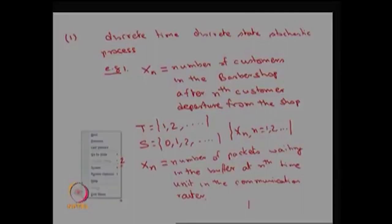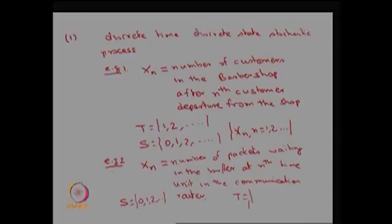There is a possibility no packets may be there at some time point, and there is a possibility many more packets may be waiting for transmission in the buffer. The possible values of capital S can be 0, 1, and so on. The possible values of capital T are the nth time unit — first, second time unit and so on. Therefore both S and T are discrete, making this collection of random variables Xn a discrete time, discrete state stochastic process.